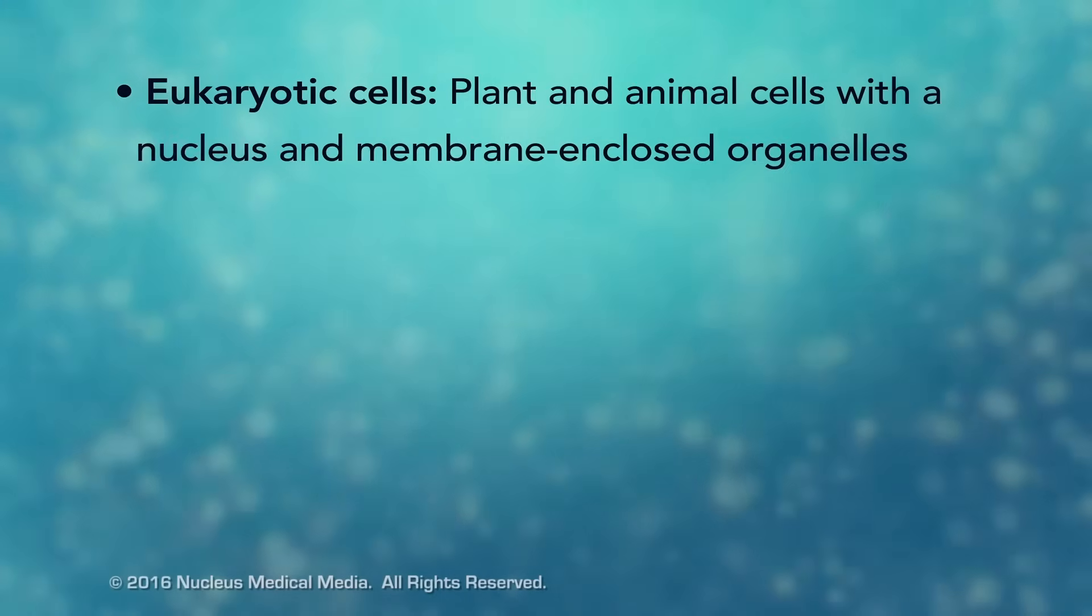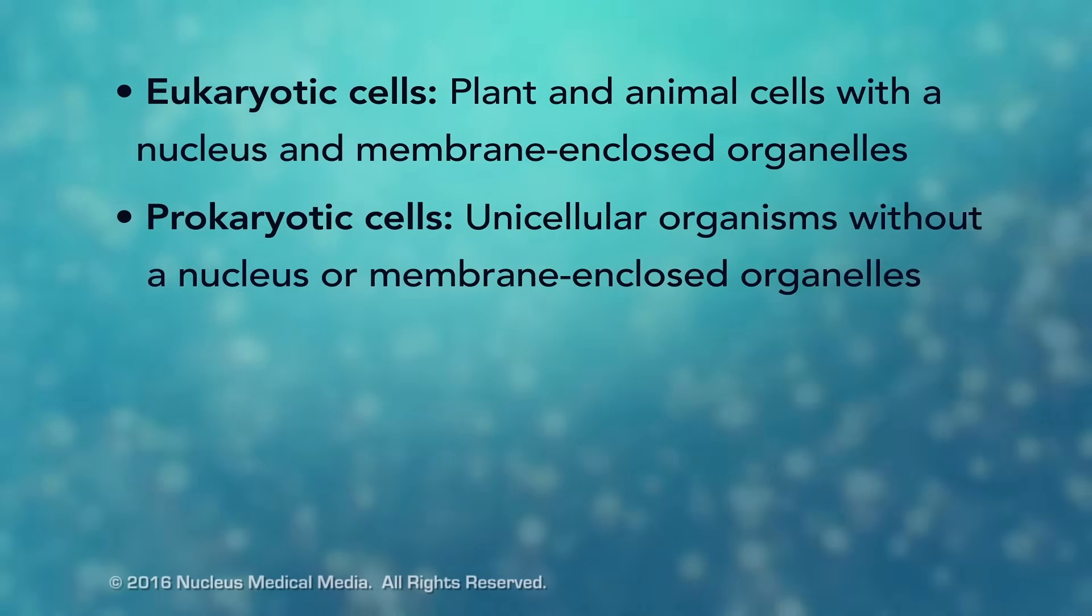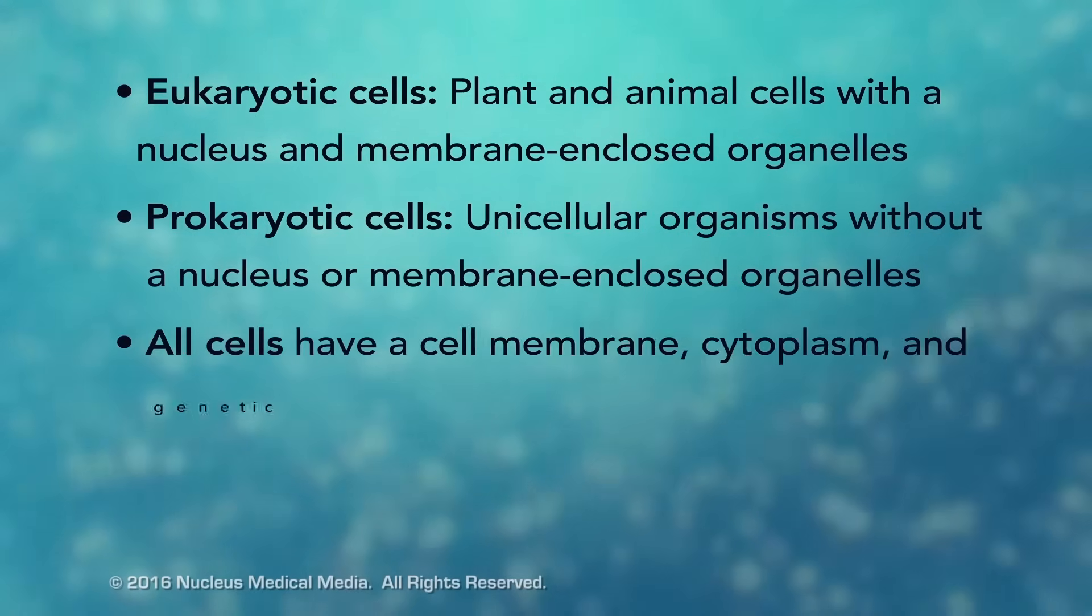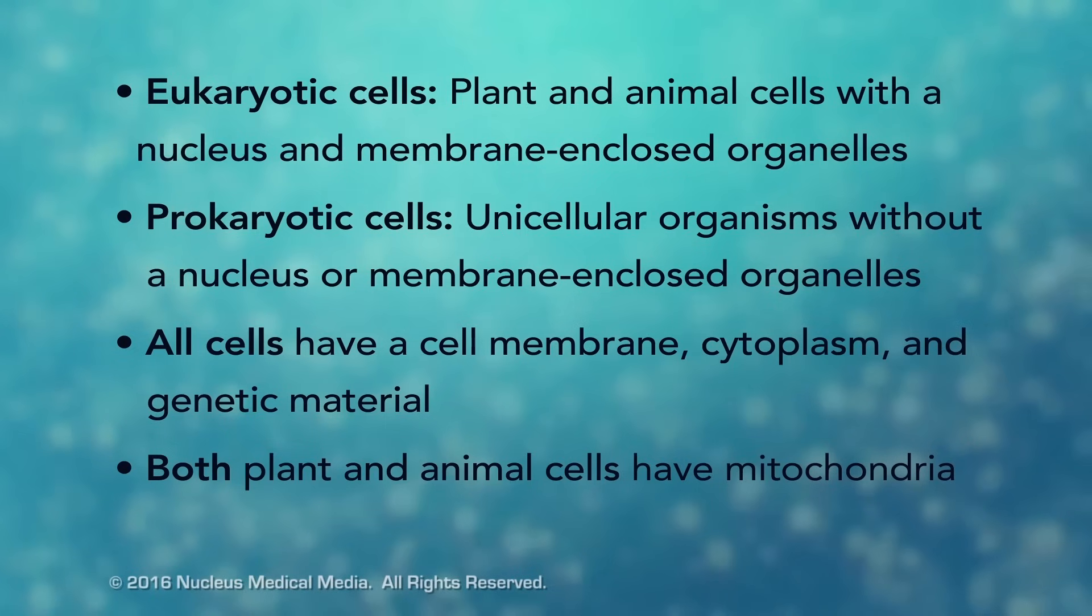In summary, remember, eukaryotic cells are plant and animal cells with a nucleus and membrane-enclosed organelles, while prokaryotic cells are unicellular organisms without these things. All cells have a cell membrane, cytoplasm, and genetic material. And even though only plant cells have chloroplasts, both plant and animal cells have mitochondria.